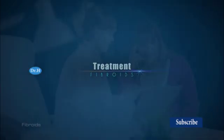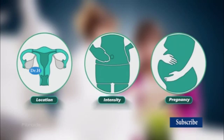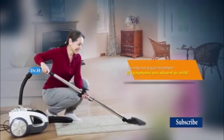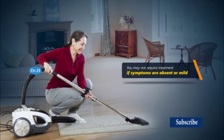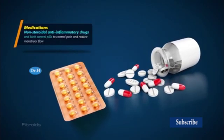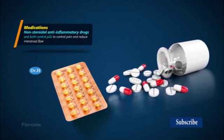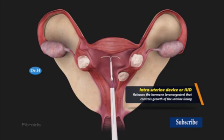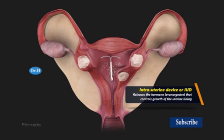Treatment depends on the location of fibroids, the intensity of symptoms, and whether you are planning a pregnancy. You may not require treatment if symptoms are absent or mild. When treatment is indicated, options include medications such as non-steroidal anti-inflammatory drugs and birth control pills to control pain and reduce menstrual flow, or placement of an intrauterine device (IUD) which releases the hormone levonorgestrel to control growth of the uterine lining.